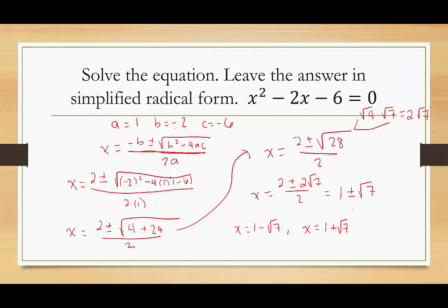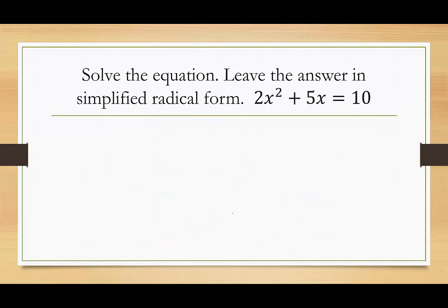What this tells us is that if we were to graph this quadratic — if this said equals y and these were just the x-intercepts — we have two real solutions, meaning the graph would cross the x-axis two times. It's not going to be in any nice place because we have an irrational part to it, but it will cross the x-axis twice.